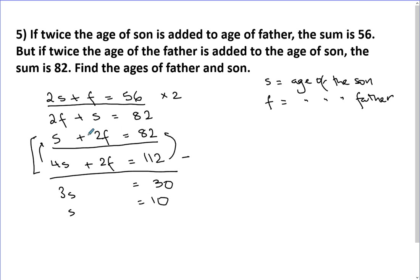And then I'll go and solve it in here. So 2S, which is 20, plus F equals 56, and you can tell F would be 36. And let's go test it in there. So 2 times the father's age, which is 36 times 2, 72, plus the son's age, 72 plus 10 equals 82. All right.